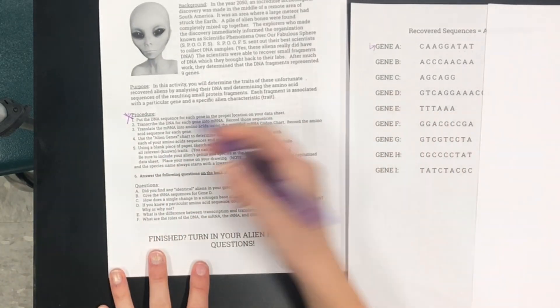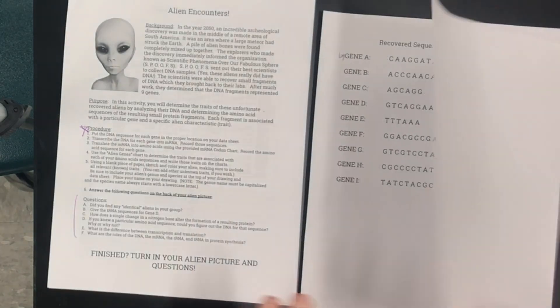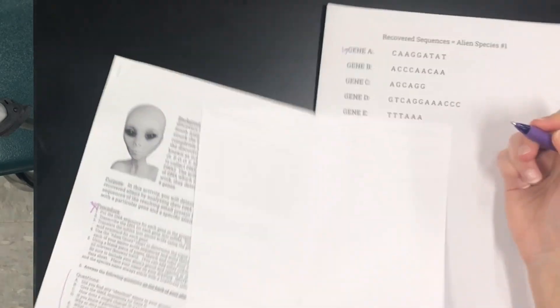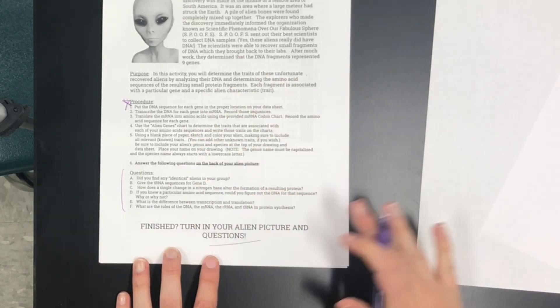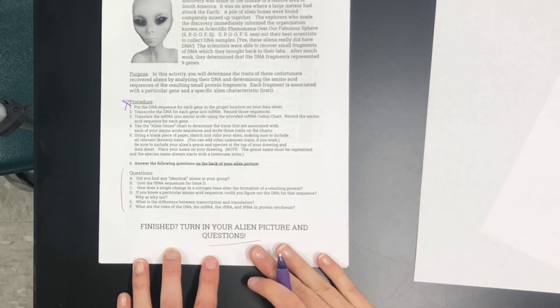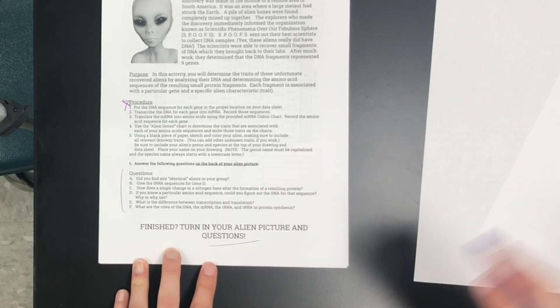Don't forget when you're finished to answer the questions on the back of your alien picture. So on one side you'll draw your alien and on the back you'll answer these questions and then you can turn everything into the turn-in box when you're done. If you need to see how I did that again please go back and re-watch this video and don't hesitate to reach out if you have any questions. Thanks guys!